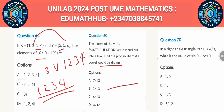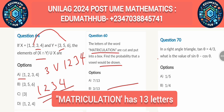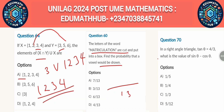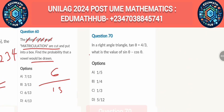Counting the letters in 'matriculation': there are 13 letters in total, so the denominator is 13. Now count the vowels: A, I, U, A, I, O — there are 6 vowels. So the probability of choosing a vowel is 6/13.